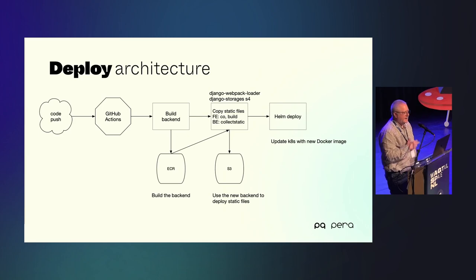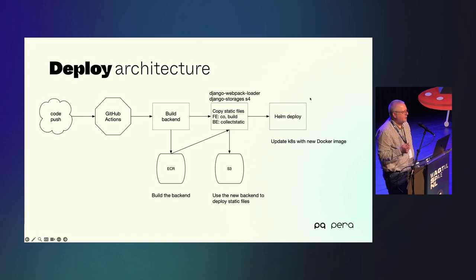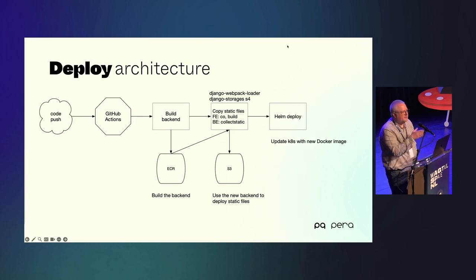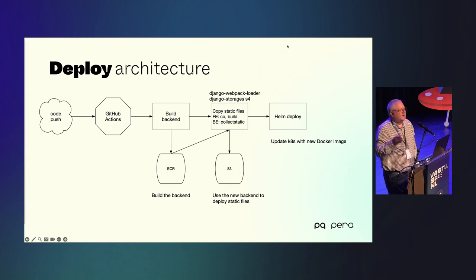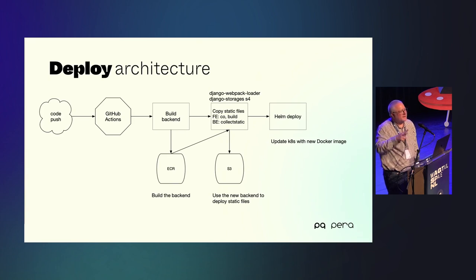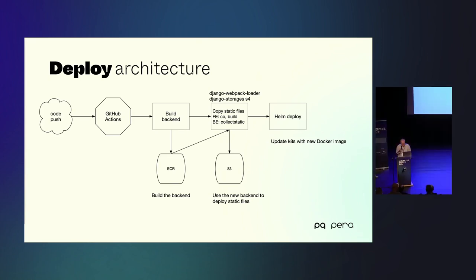Then we trigger another image which uses Helm to deploy into the Kubernetes cluster. Static assets go first, then we deploy the code — which is expecting those images and static assets to be there. It's very important to get that the right way around, as we discovered.